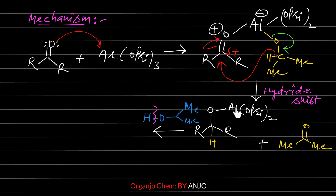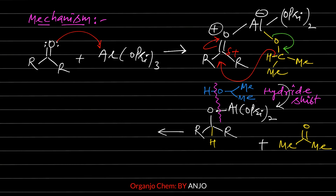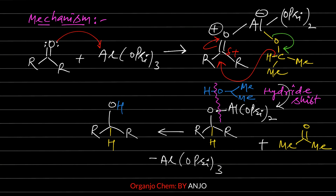We have obtained isopropyl alcohol. The isopropyl group joins with the aluminum, and in this step of the reaction, aluminum isopropoxide is regenerated, and finally we get the formation of alcohol.